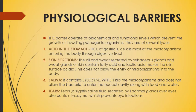Number two is skin secretion. The skin has oil glands and sweat glands which naturally secrete oil and sweat. Sweat is of a very saline and acidic nature. It has lactic acid and fatty acids which make the skin surface acidic. Because of the acidic surface, this does not allow the entry of microorganisms into the body. The oil and sweat secreted by the sebaceous glands and sweat glands of the skin contain fatty acid and lactic acid, making the skin surface acidic and preventing microorganism entry.